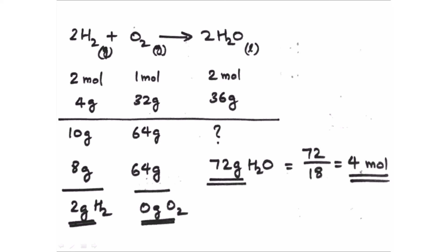This is how we approach all stoichiometry-related problems. Key steps are: identify the reaction, write the balanced equation, and note that states of matter are very important. Since we use stoichiometric coefficients, the volume relationships and states of gases must be considered carefully.